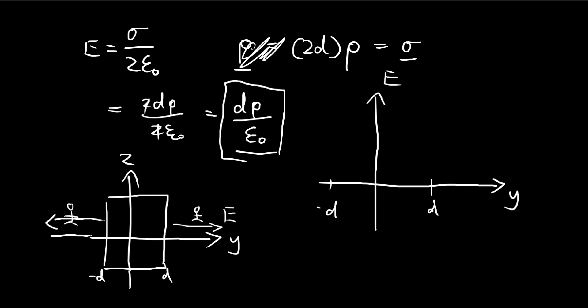So at these points, we know that this graph over here is going to look something like this. It's going to be a straight line. And then this straight line is going to correspond to this point, which is going to be equal to d rho over epsilon.